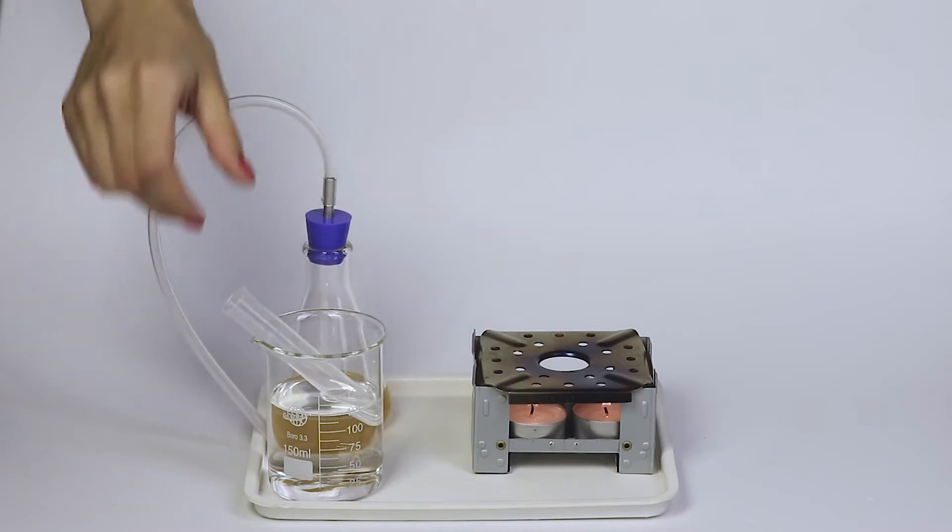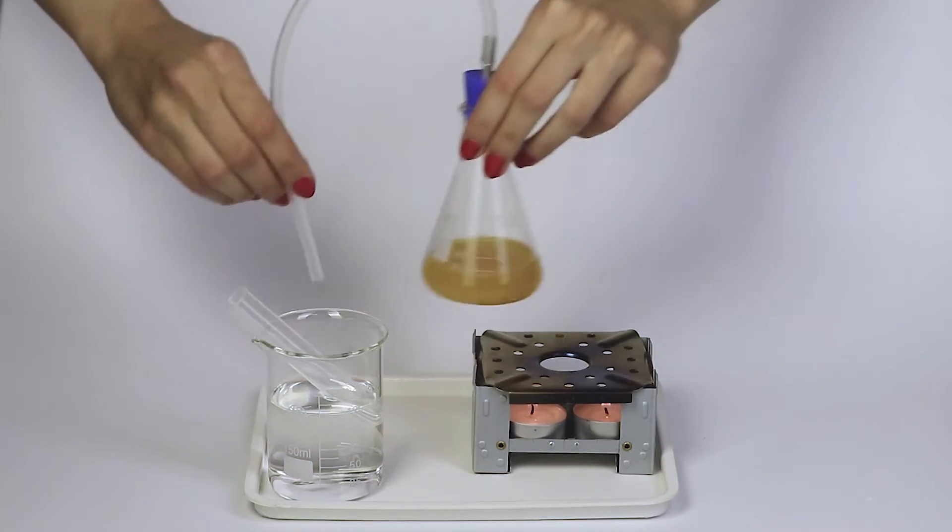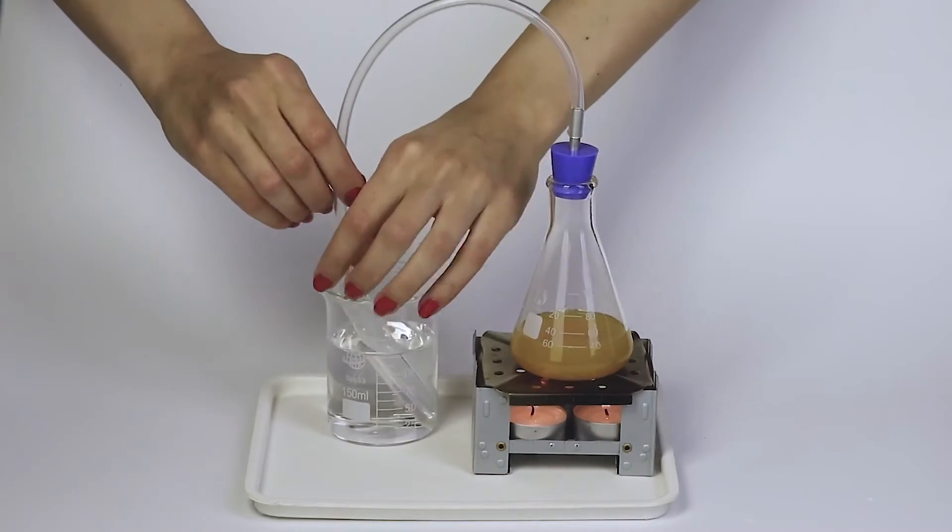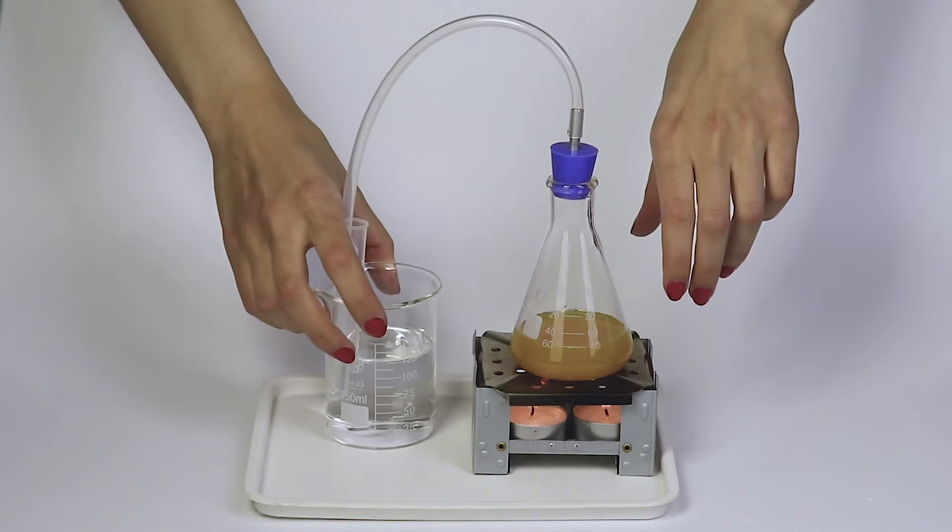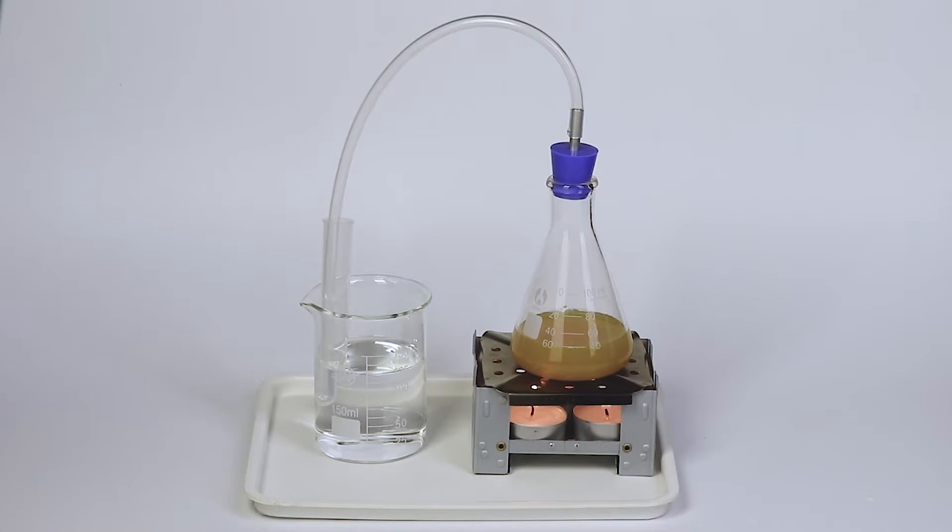Now put the test tube into the beaker with the water. Put the flask onto the flame diffuser and place the loose end of the silicon tube into the test tube.